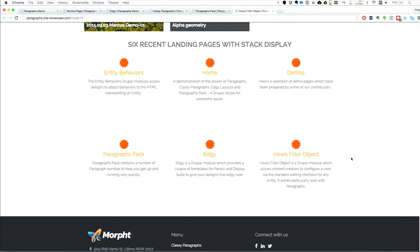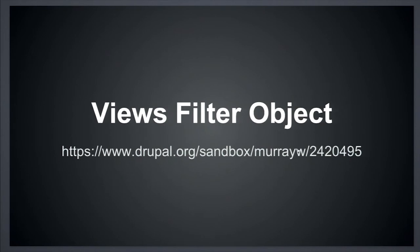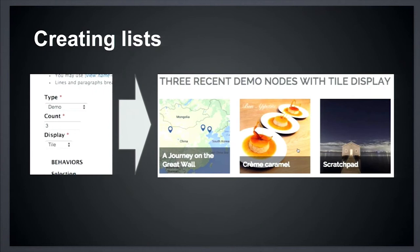Views Filter Object is currently a sandbox. The module allows an editor to create a list — they can select which content type, how many items should be displayed, and which view mode. That then translates into the rendered output. It's important to understand that this simply lists content — it doesn't reference content like in Paragraphs Pack. In essence, we've given editors a simplified views interface.